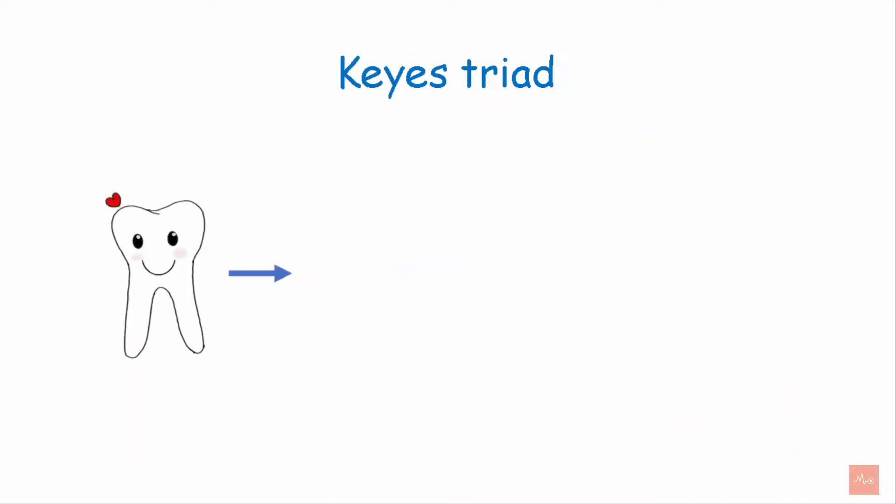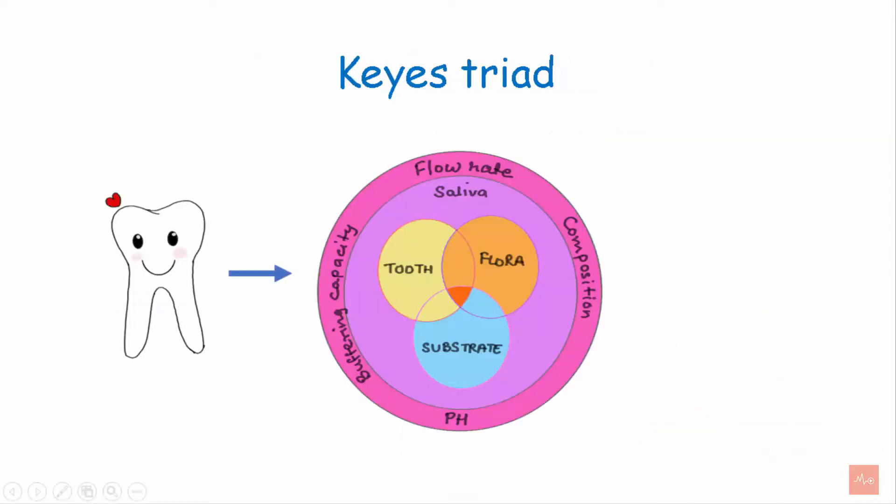This is a healthy tooth and this is Key's Triad which explains the tooth, flora, and substrate together causing dental caries. All this is influenced by buffering capacity, flow rate, composition, and pH of saliva.